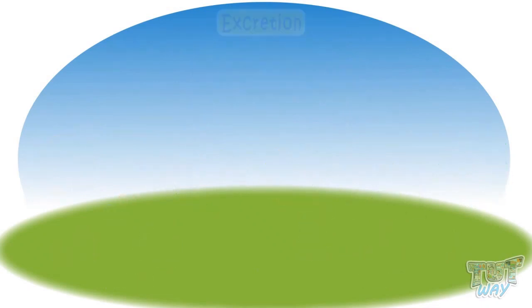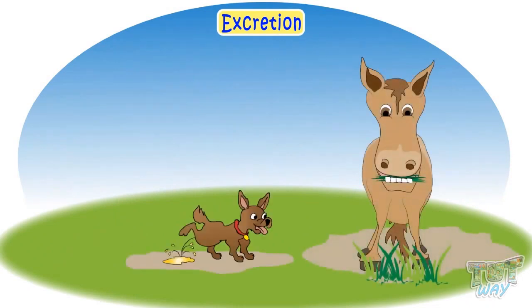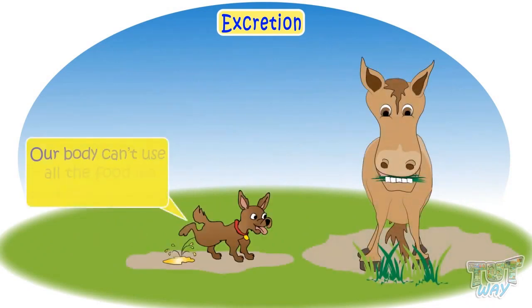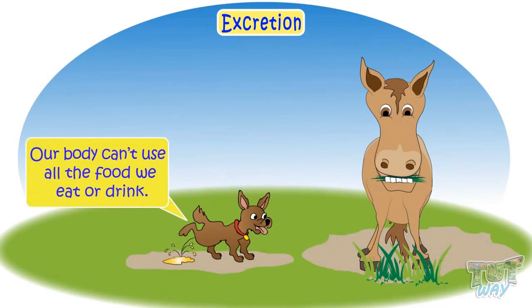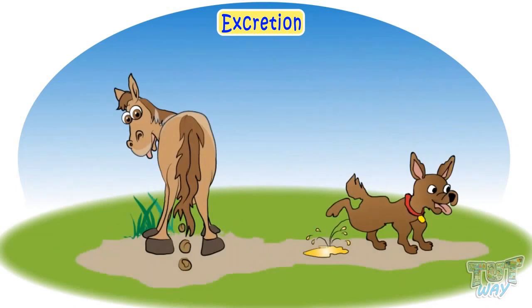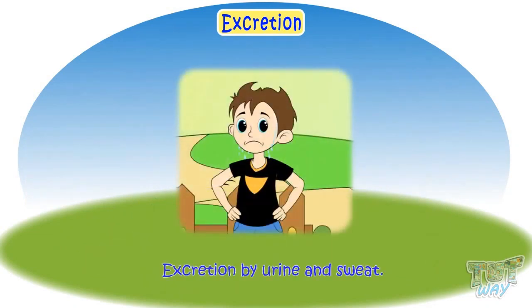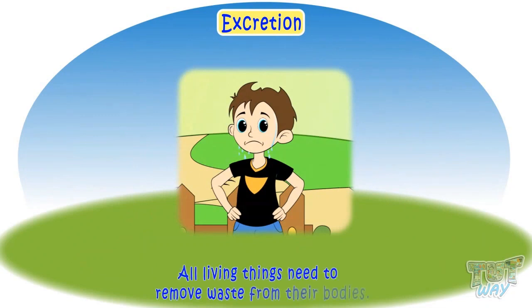Excretion is another important feature of all living things. Our body can't use all the food we eat or drink, so some part which is not used by our body is excreted out in the form of urine and sweat. All living things need to remove waste from their bodies.